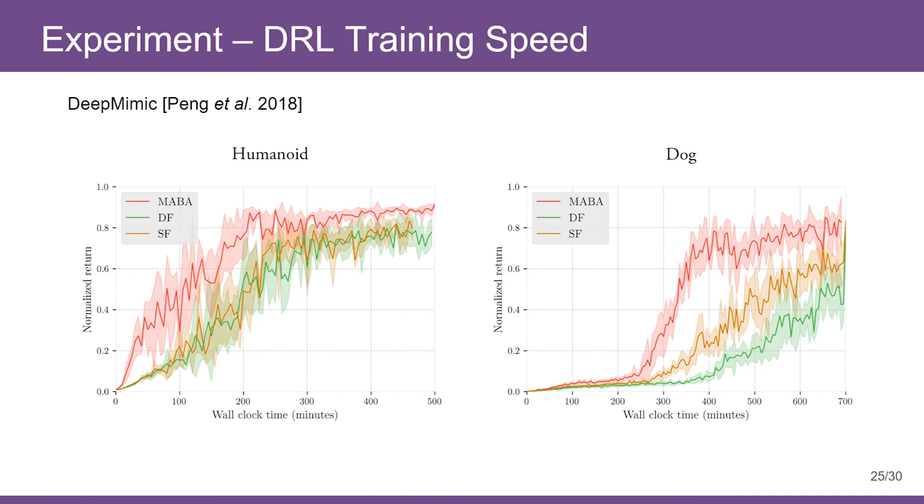Our previous experiments are quasi-physics in nature. Here we show some true physics demonstrations. We compare training speed of DeepMimic under different SPD implementations. We train a running motion on humanoid and a trotting motion on dog. Our training curves suggest some noticeable improvements.